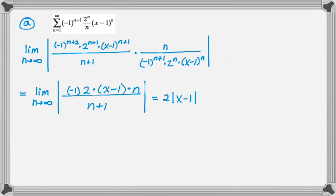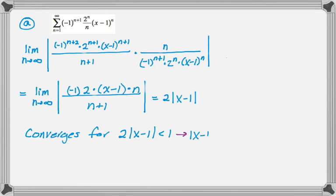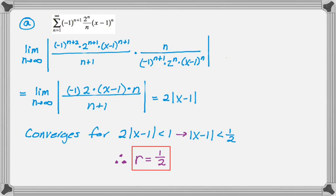From the ratio test, the series converges whenever 2 times the absolute value of (x−1) is less than 1, which means the absolute value of (x−1) is less than 1/2. That's the radius of convergence, so r equals 1/2. It's mostly just algebra with some limits and conceptual understanding.